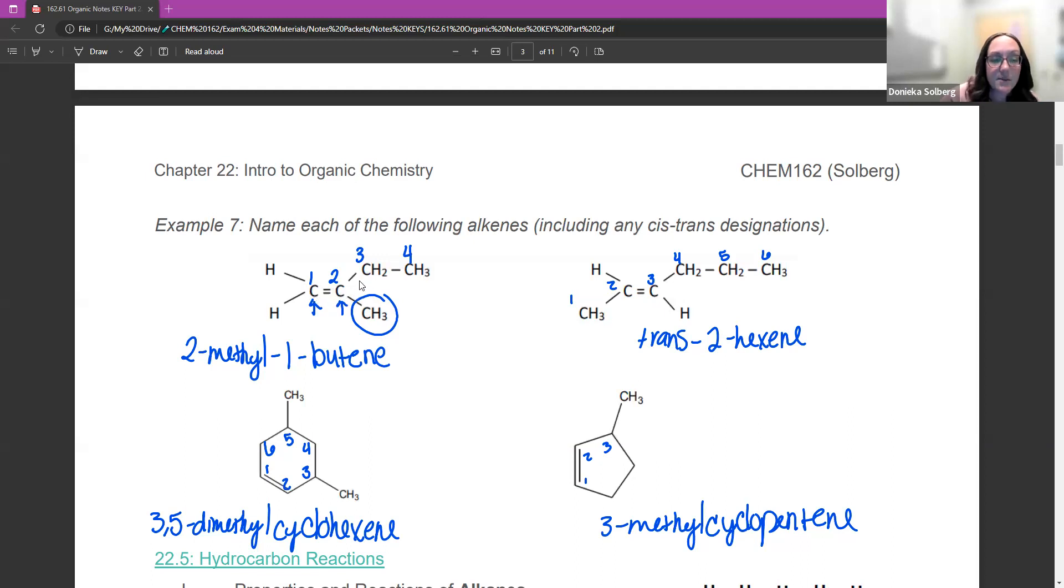I do have a substituent, a methyl group on carbon two. So this is 2-methyl-1-butene. Why did I not say cis or trans here? Because both of the groups are on the same carbon. These are both hydrogens. You have to have groups on both of the carbons.